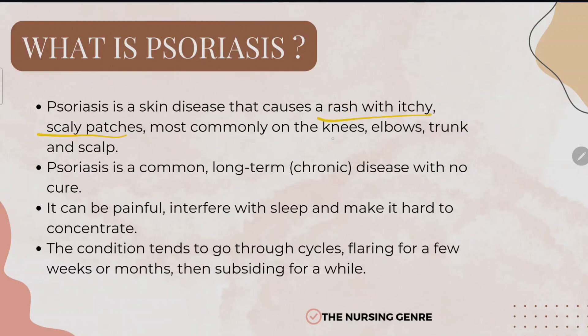Psoriasis most commonly affects the knees, elbows, trunk, and scalp. It causes itchy and scaly patches, similar to dandruff. The trunk refers to the area below the neck, including the pelvic region, as well as the scalp areas.